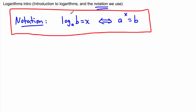So we write log base a of b equals x. That's how we say it. It's the same thing as saying a to the x equals b. The little trick I like to remember: whenever I want to rewrite something in exponent form, I always start with the base and go: this to the power of this equals this. So a to the x equals b — sort of go around in a little mini circle.